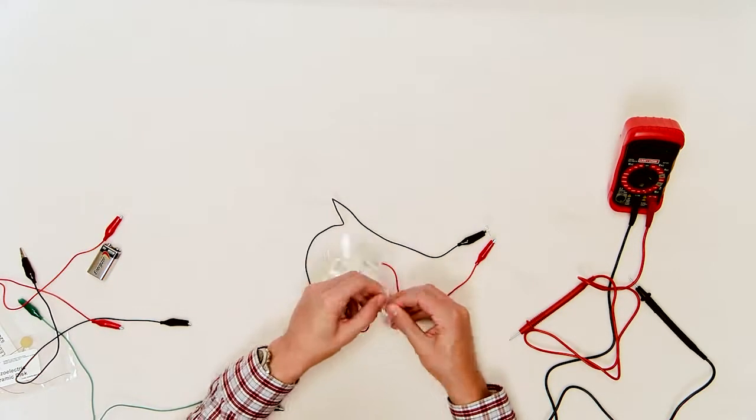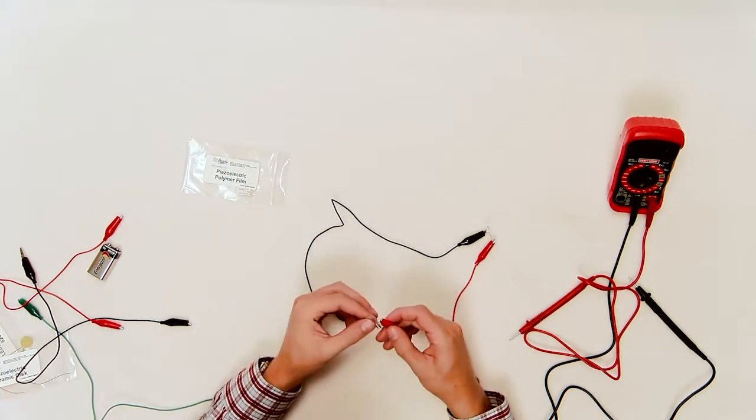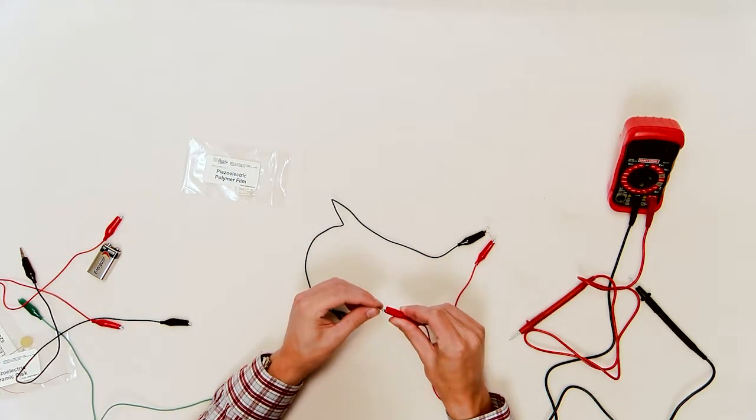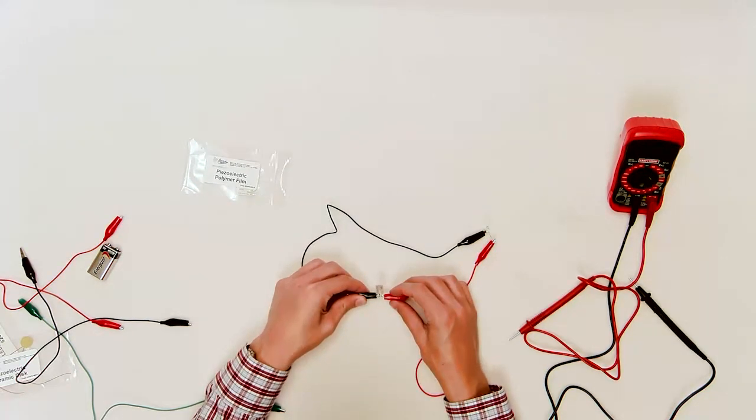Connect one LED to a piezoelectric polymer film so that one wire of the LED is connected to one leg of the film and the other wire on the LED is connected to the other leg of the film. Use the supplied alligator clips to make these connections.